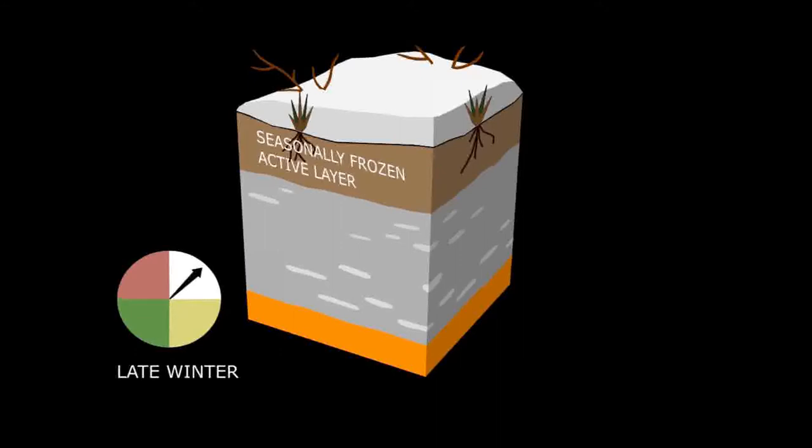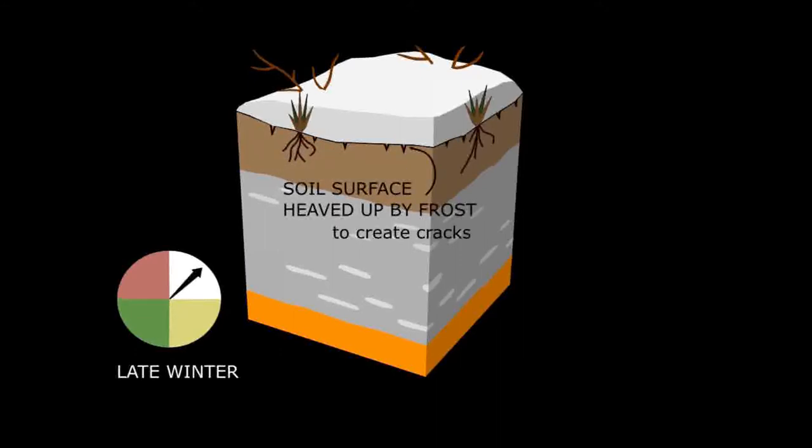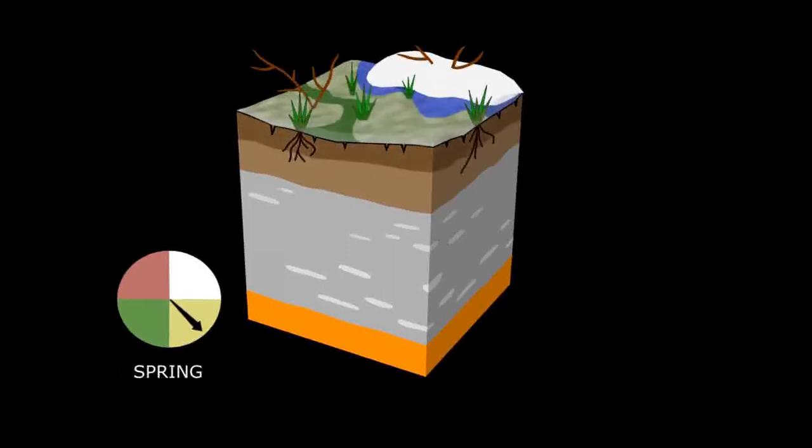These cracks are described in another educational resource. In a stable climate, the seasonal cycle of active layer freezing and thawing continues for decades or even hundreds of years.